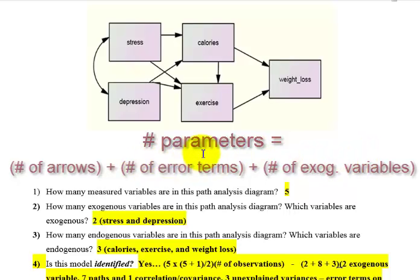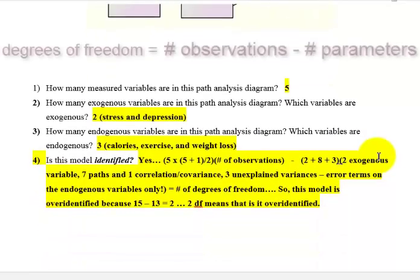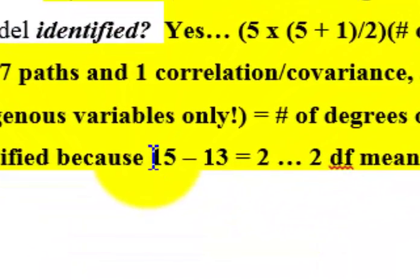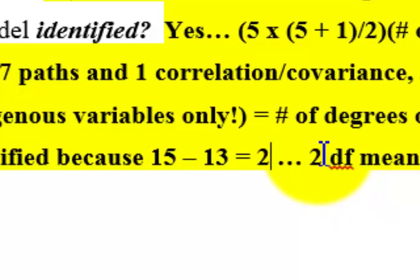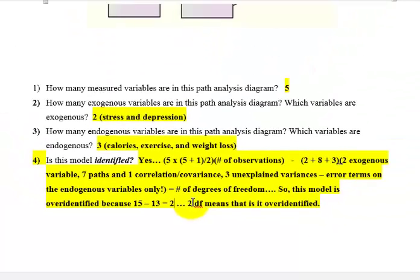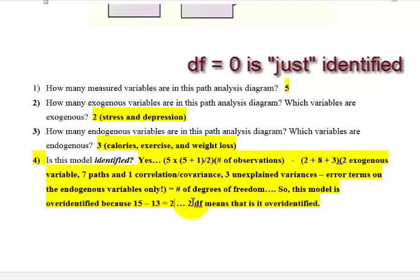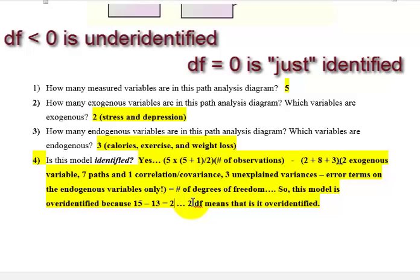So we take the total number of observations, which is 15, and subtract the number of parameters, which is 13, and that leaves us two. That's your degrees of freedom. If degrees of freedom equals zero, the model is just identified, which is not bad. If it's negative, the model is not functioning. What you want is degrees of freedom greater than zero — that means it's over-identified, which is the answer.